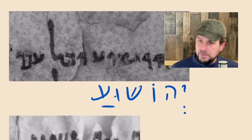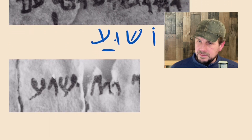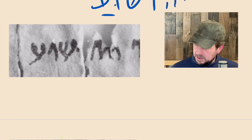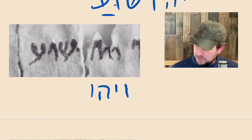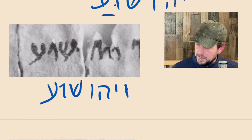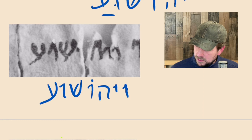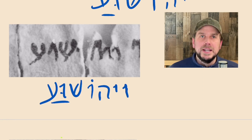Here, from a completely different scribal hand — sadly this one is torn a little bit — but it is Vihoshua: Vav, Yod, He, and then it's broken, but we can imagine there's a Vav in there, Shin, Vav, Ayin — Yehoshua. In this particular style, the Vavs and the Yods have a little hook at the top of them. Vihoshua — but again, Yehoshua. Not Yehoshua or Yahushua.